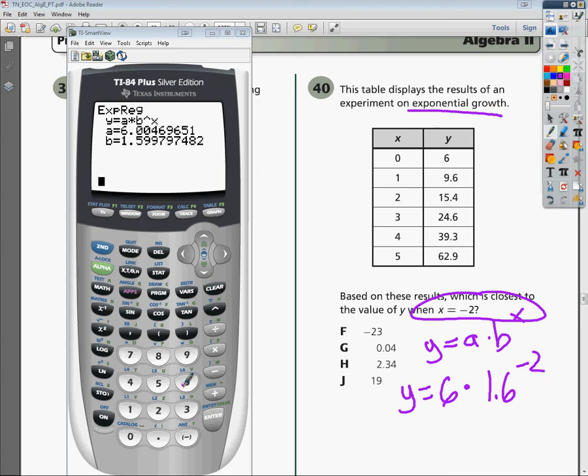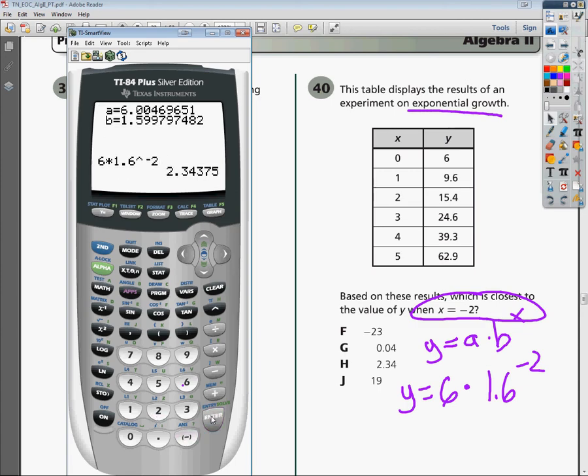So I'm going to do 6. It would help if I turned the screen on to where I'd actually press the buttons. And just because it says y equals doesn't mean you have to graph, obviously. You're just typing in to see if the punched in solution will work, if the substitution works. So 6 times 1.6 raised to the negative 2 power. And that answer gives me 2.34, which is h.